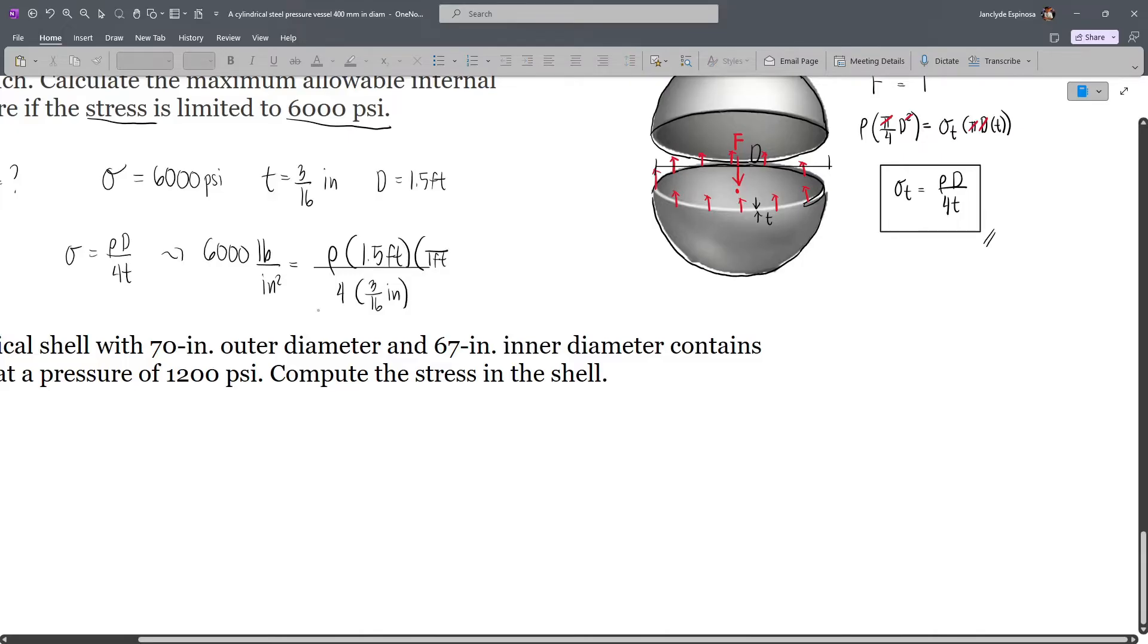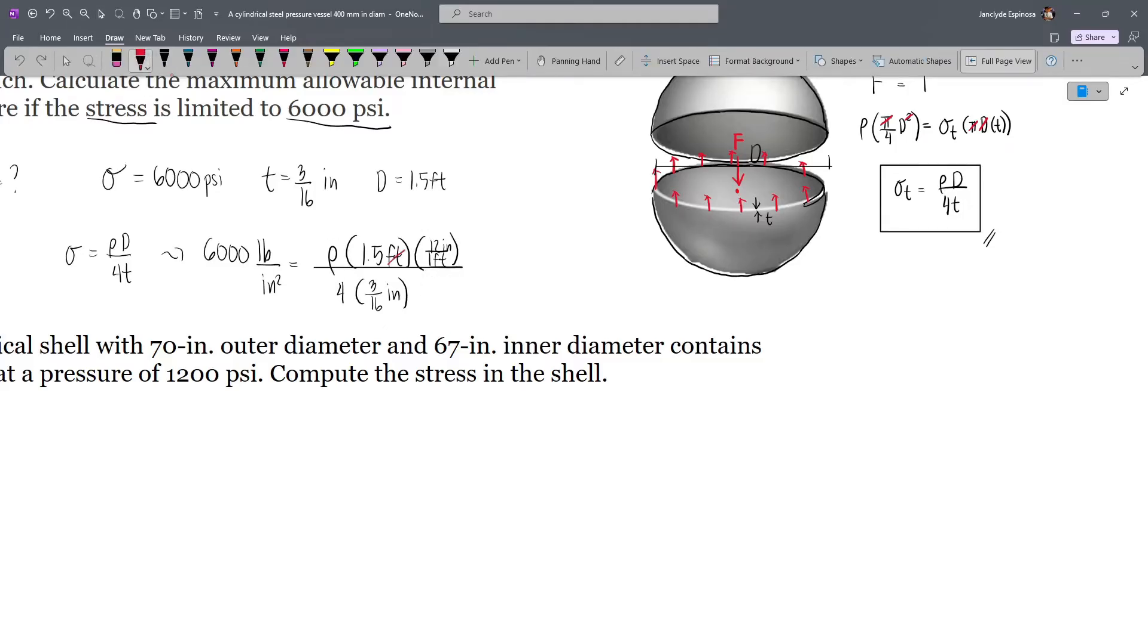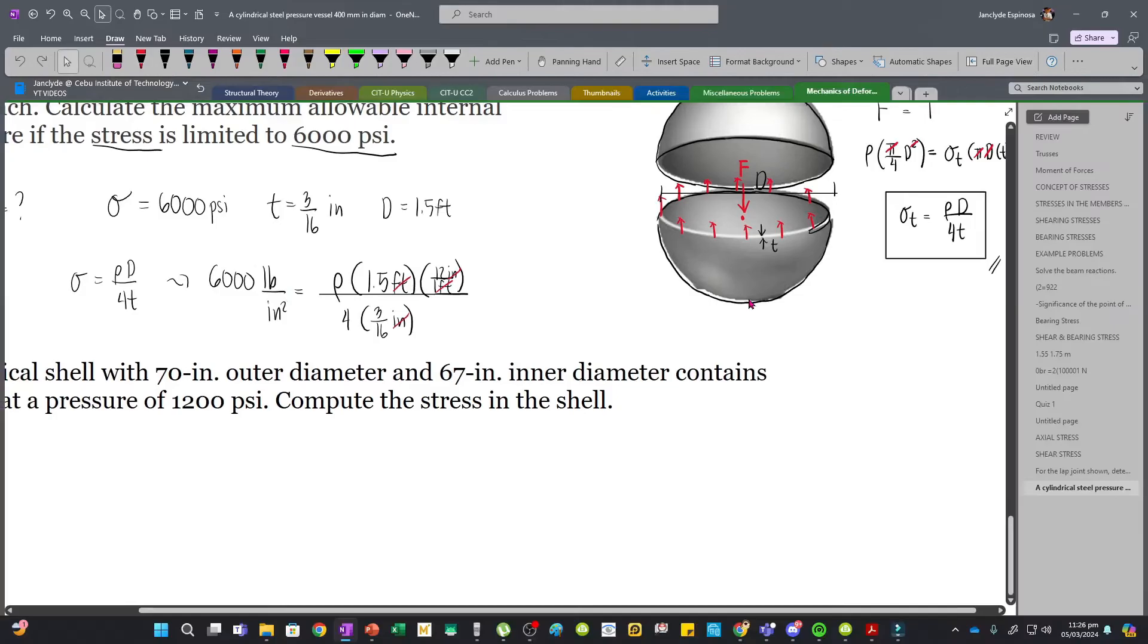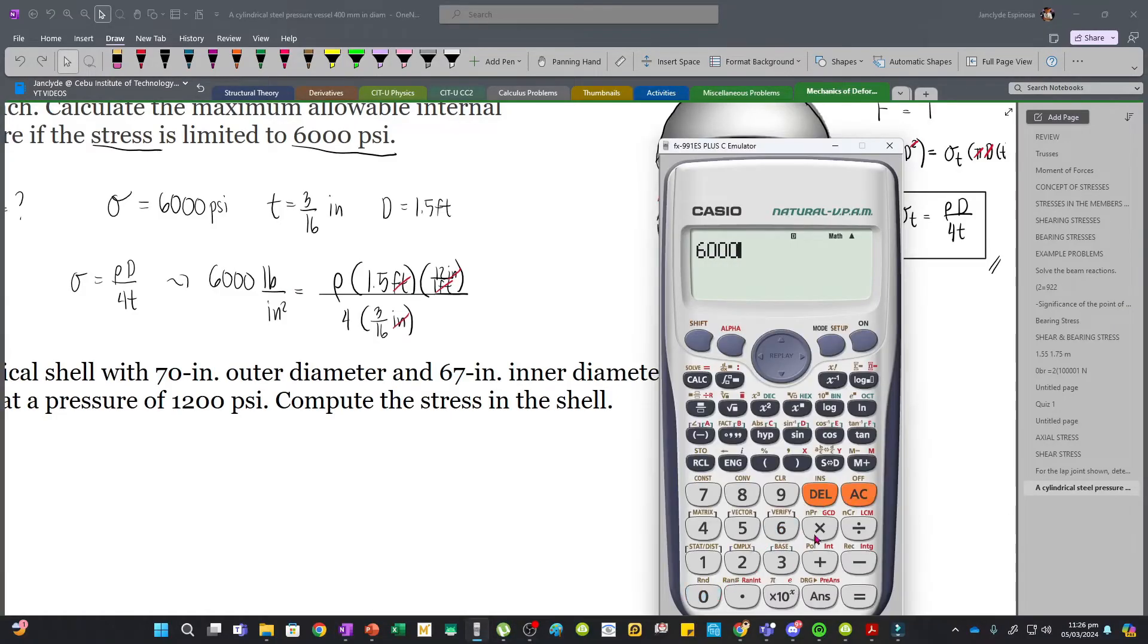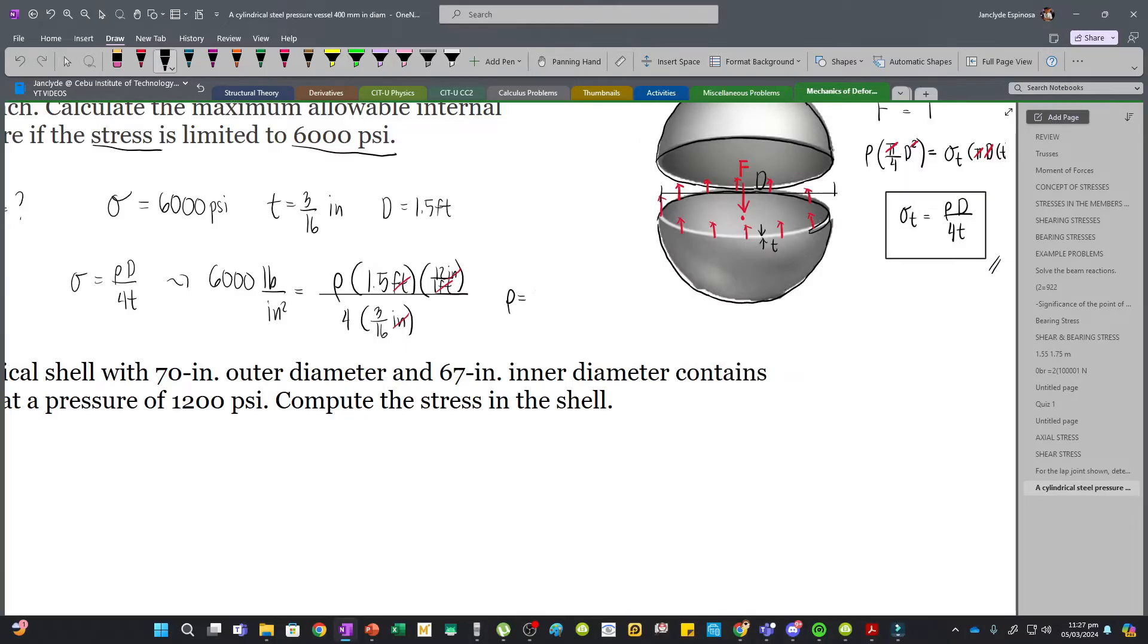We need to convert this. We know that 1 foot equals 12 inches. What we are doing here is making our units consistent so that our value of P will be in PSI. Solving P, we have 6000 times 4 times 3/16 divided by 1.5 times 12, which gives us 250. So P equals 250 PSI. This is our answer.